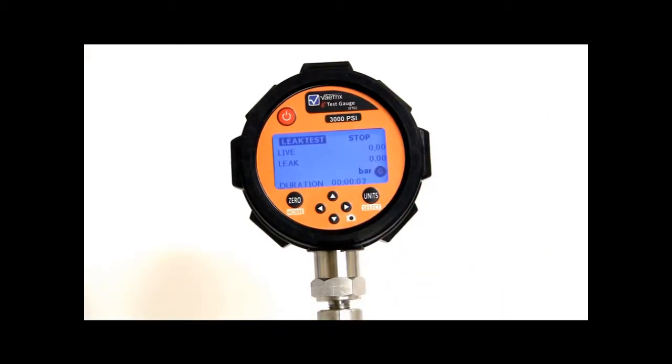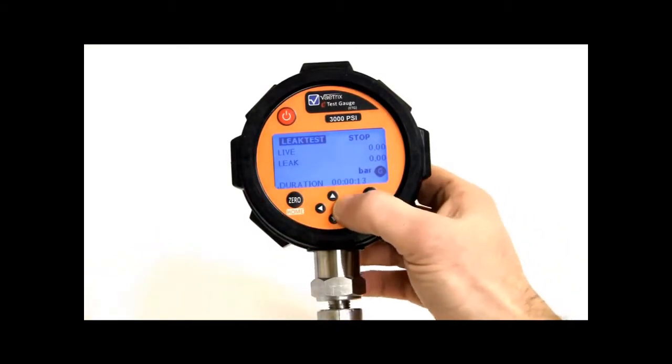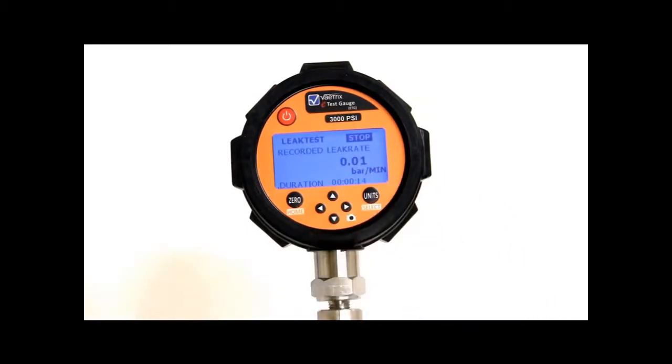So now I'm in live leak test mode. So leak test lets me check cylinders, tanks, anything that you want to check for a leak. You have to run for 10 seconds and it will tell you the leak rate. So I can scroll over, hit stop. It's going to tell me the leak rate in whatever units I'm in per minute.